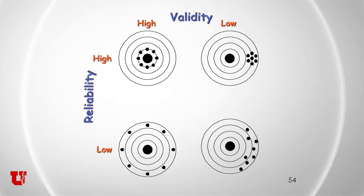A measurement may be very reliable — all those shots are grouped very closely together — so when you repeat the measurement or use the same method on different subjects, you're always getting consistent results. That's a desirable characteristic. Even if, as shown in the upper right, the average of all those measurements is not actually hitting the bullseye, they're still hitting the same spot reliably. So if you use the same method across all study participants, you expect the error to be very similar. That's low validity but high reliability — it's reproducible, and reproducibility is very desirable.